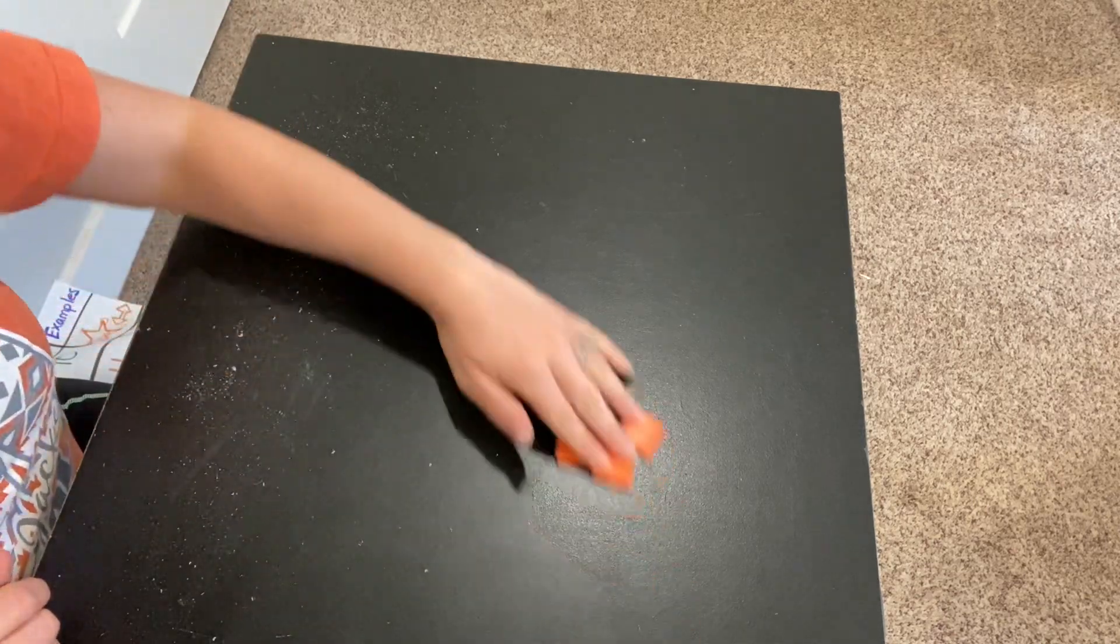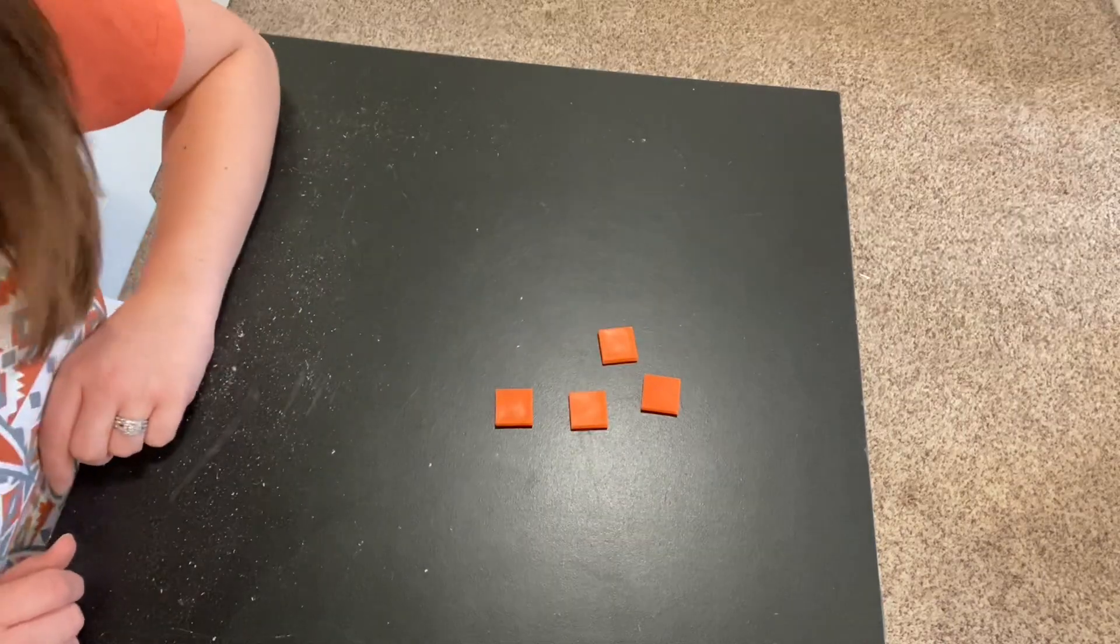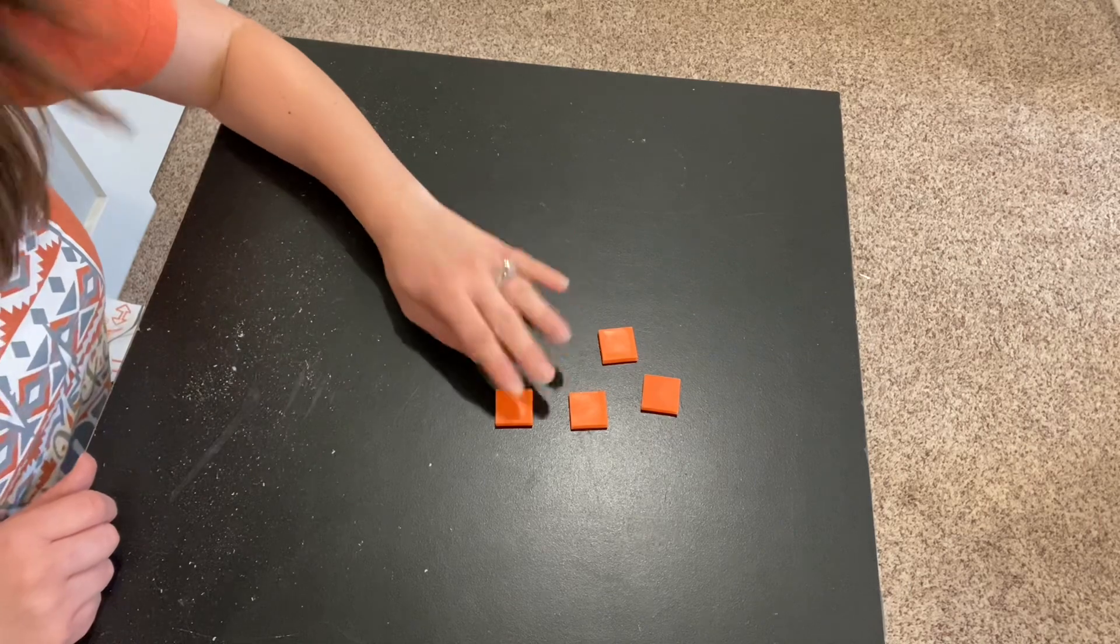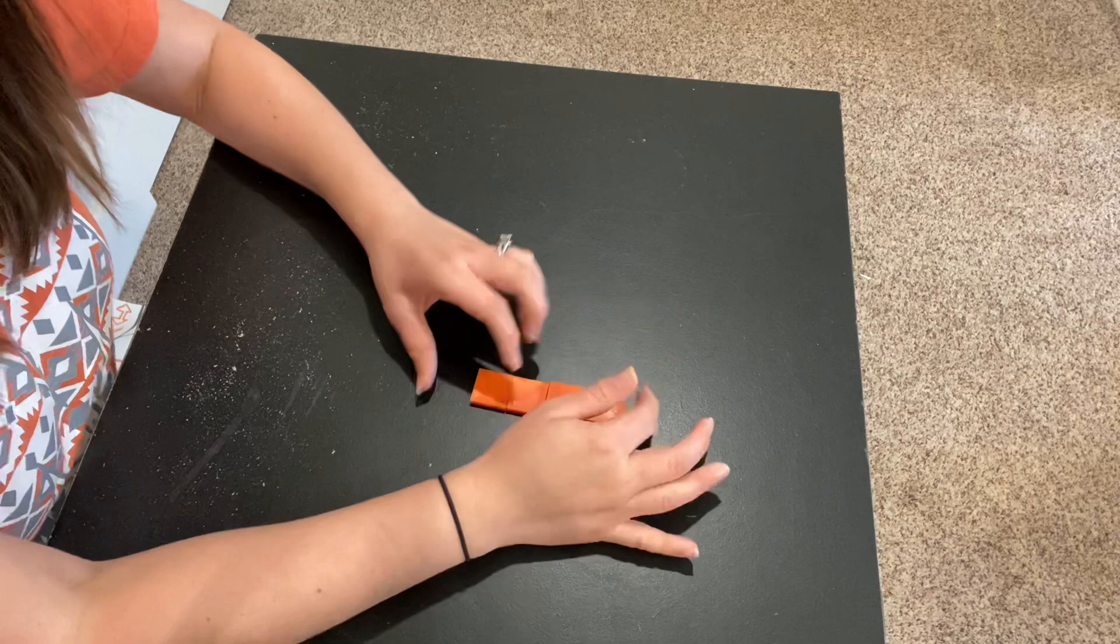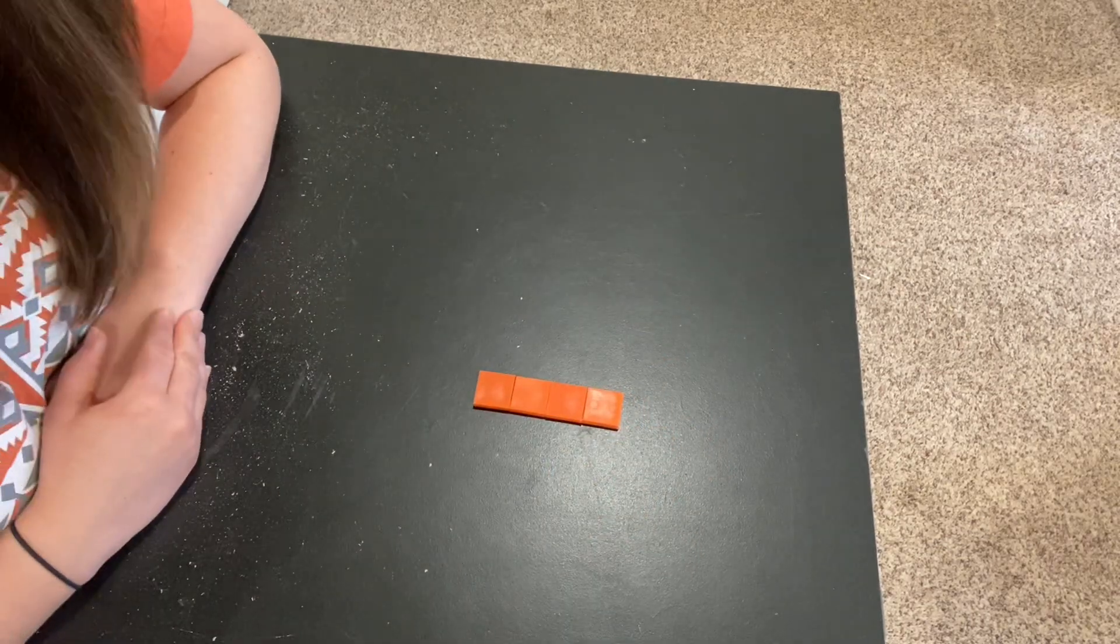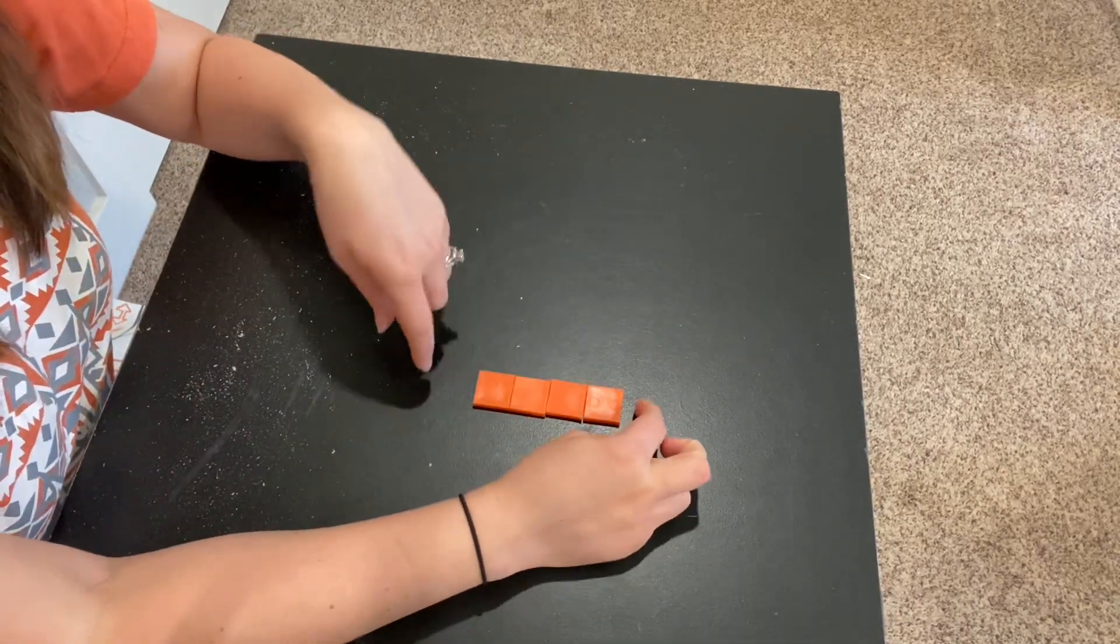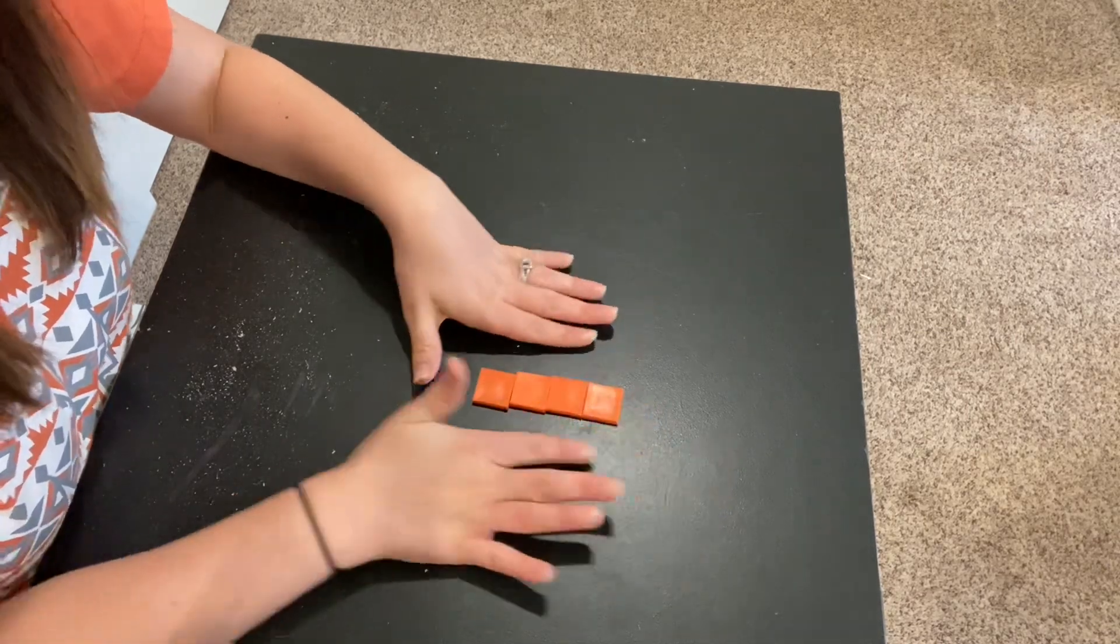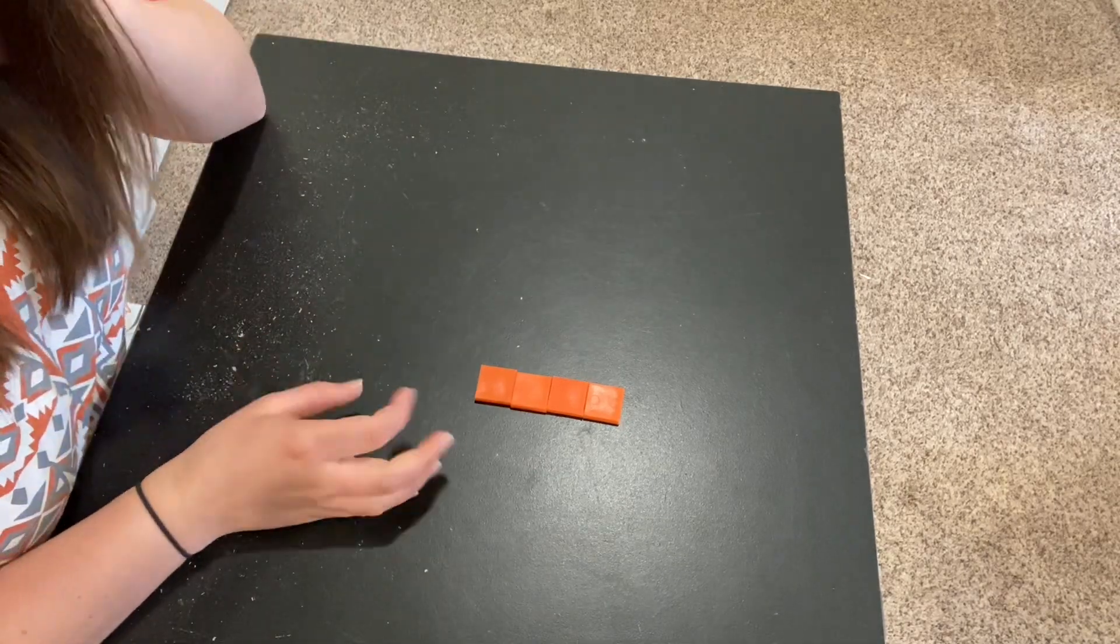What if I have four squares? What could I make using four squares? I can compose, if I put them together this way, a rectangle. See, it has two sides that are the same length and two sides that are the same length. Two of them are longer and two of them are shorter. I'm having a hard time putting them all together, but that's a rectangle made out of four squares.